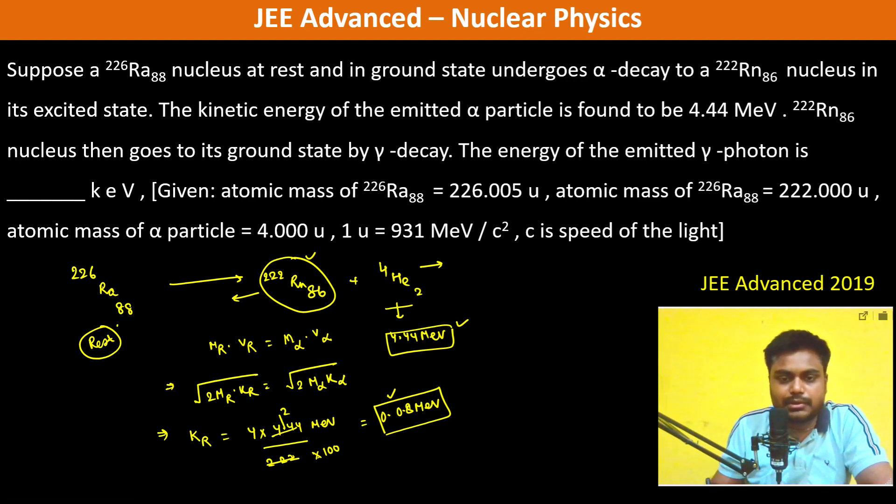Mass defect delta is equal to 226.005 minus 222.00 plus 4.00, so this is 0.005. Now due to this, the energy that is the energy which is liberated, it is going to be 0.005 into 931 mega electron volt by c squared into c squared.